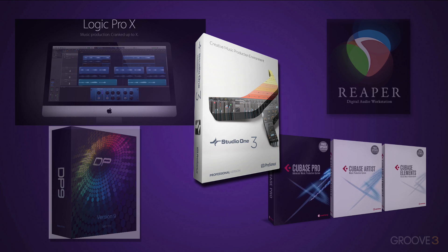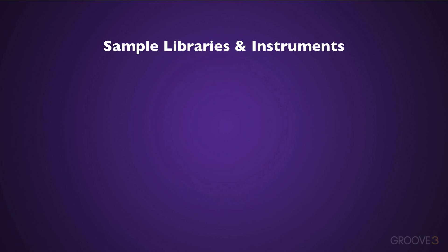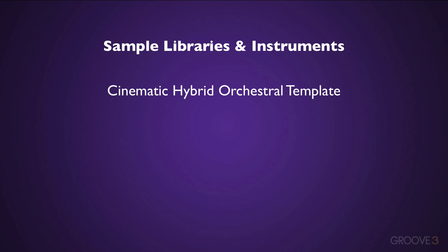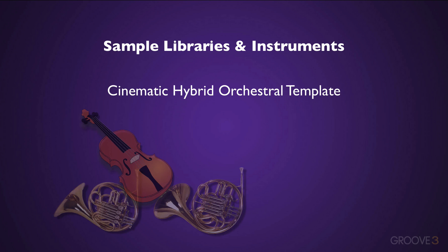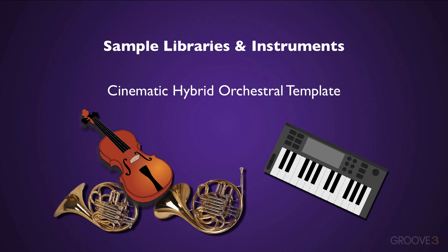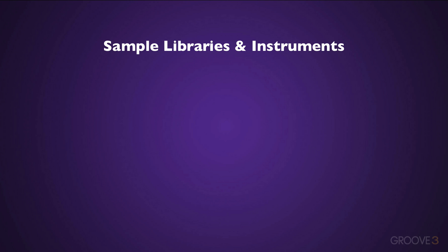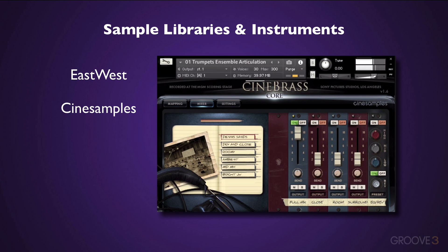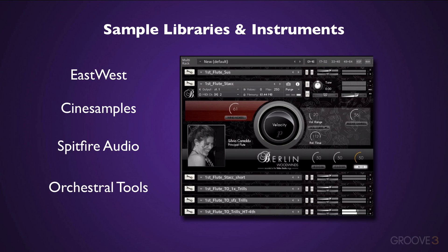There are other options, but these ones cater more towards the MIDI side, where you're going to be mainly working with your cinematic compositions. And then you'll need a good selection of sample libraries and instruments. This template will be a hybrid selection of orchestral and synthetic instruments. You can explore what libraries you want to use, but the most common are libraries from East-West, CineSamples, Spitfire, and Orchestral Tools.